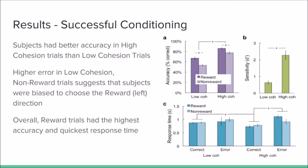This is shown in graph A on the top left, and sensitivity to the higher cohesion trials is depicted in graph B. However, there was some bias as participants tended to prefer choosing the reward-associated side over the non-reward side.